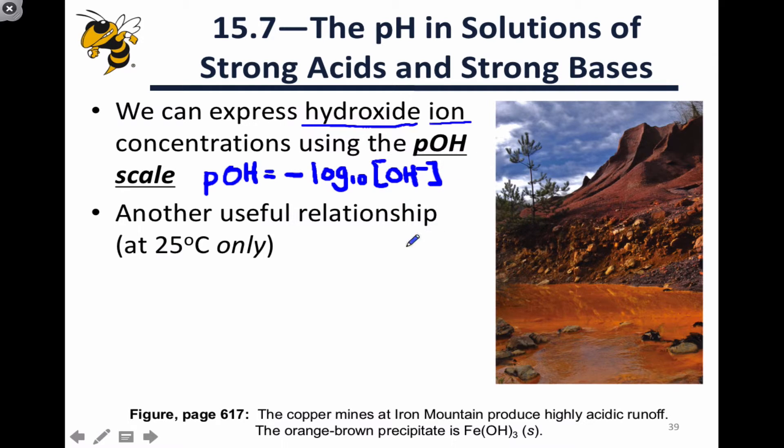So pOH is the negative base 10 logarithm of the hydroxide ion. And similarly to pH, it most commonly shows up between 0 and 14, although it can go below or above that range.